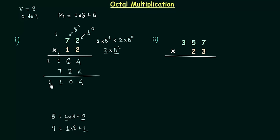So finally we have 1 here, and 1 1 0 4 is the answer of this octal multiplication.